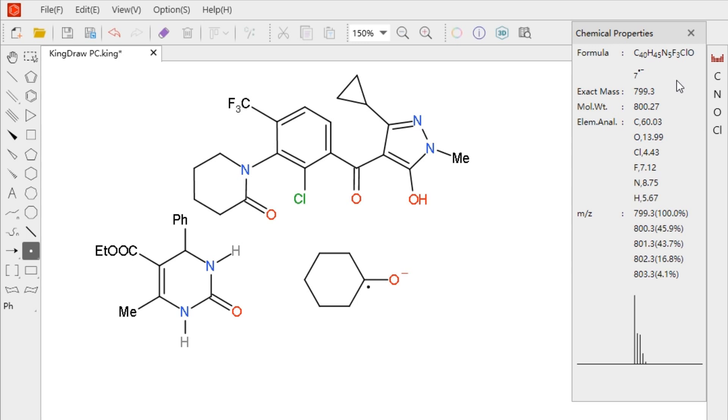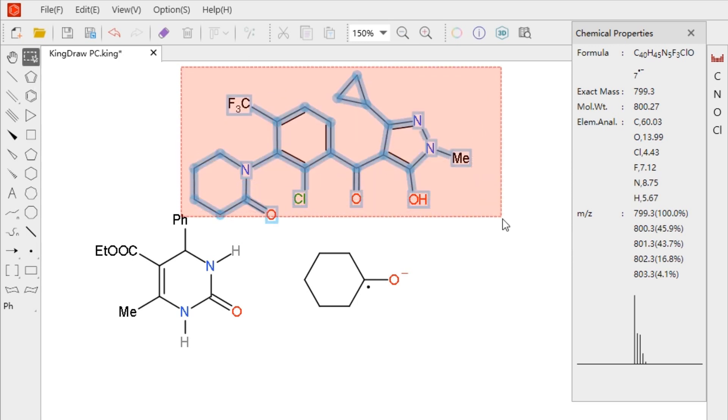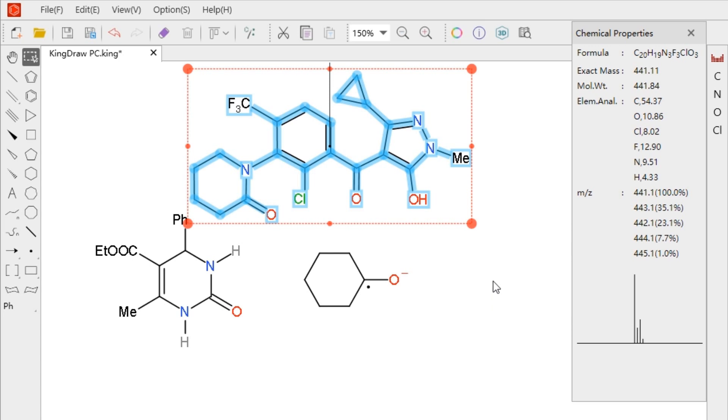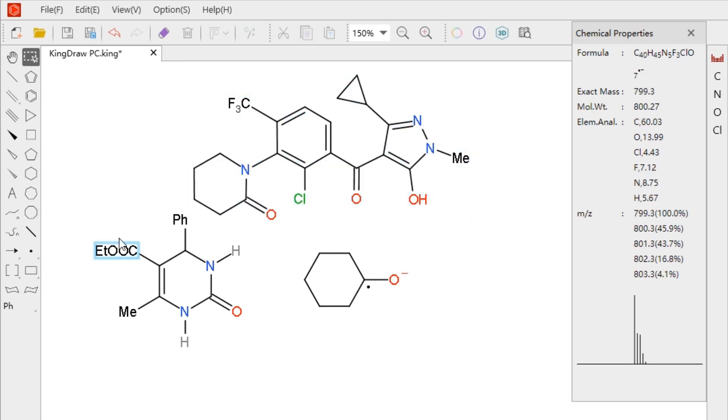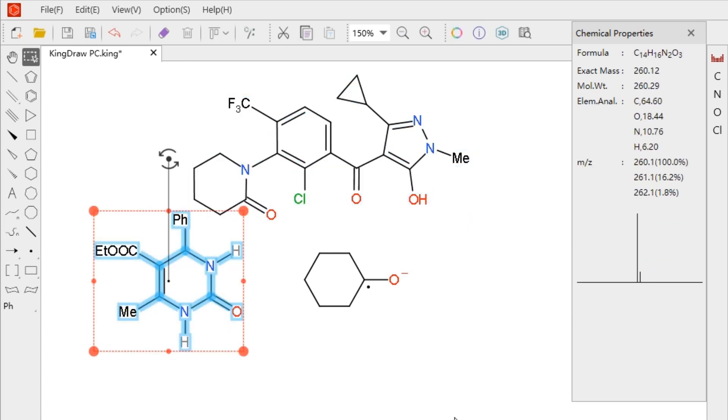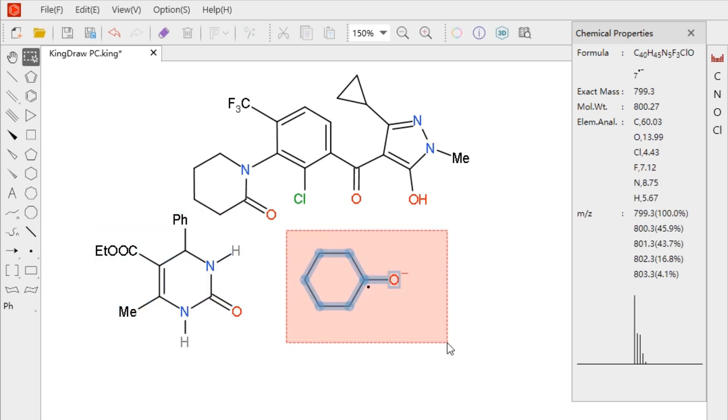If we need to view the properties of a single structure or part of it, we only need to use the marquee tool. The data in the chemical properties window will be calculated in real-time according to what we select.